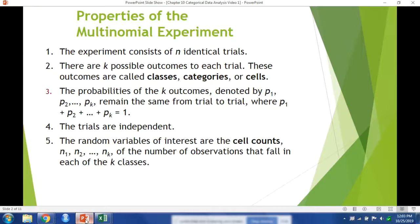Let's go over important properties of multinomial experiments. First, the experiment consists of n identical trials or our sample size is some value of n. There are k possible outcomes for each trial and the probabilities remain the same for each trial. Trials are independent and the random variables of interest are the number of observations that fall in each class.